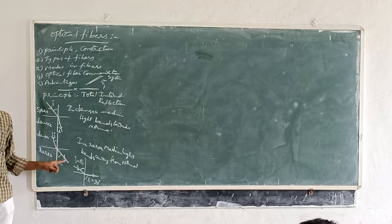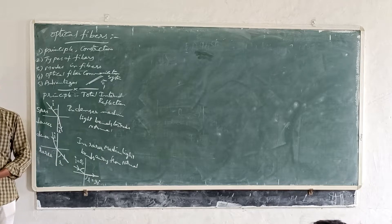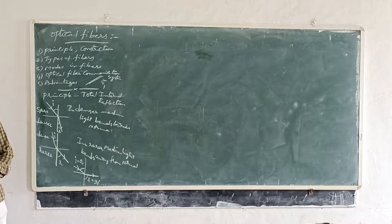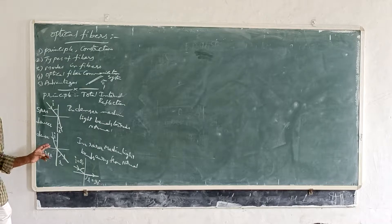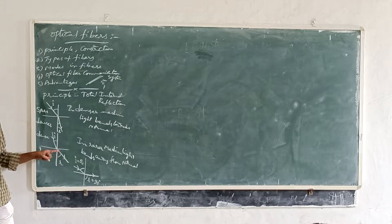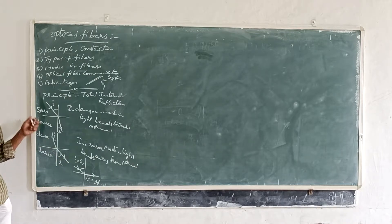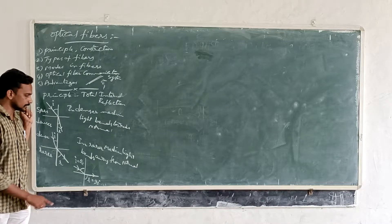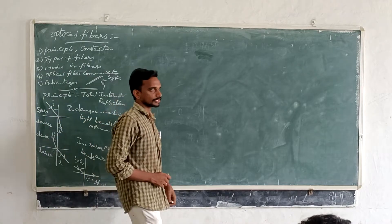So the angle of incidence at which the angle of refraction is equal to 90 degrees, and light travels into the rarer medium — that particular angle of incidence is called the critical angle.